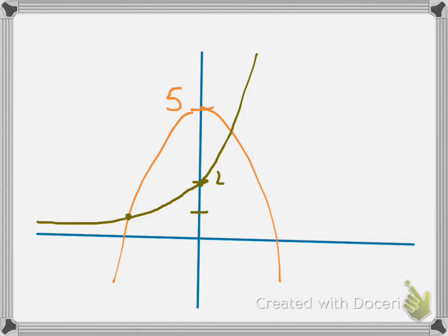We want to find those two points of intersection because we're going to need those values to evaluate the integrals. We need to set the two equations equal to each other: e to the x plus 1 equals 5 minus x squared. This is not something you're going to solve by hand — use technology. The easiest way is to graph the two functions and use the calculator's intersection command to figure out the x-coordinates.